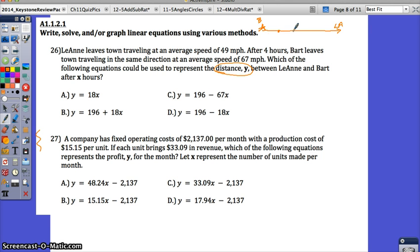After 1 hour, what's happening to the distance? Leanne's getting farther away. After 2 hours, farther away. After 3 hours, farther away. After 4 hours, farther away. How far is Leanne from Bart? She's traveling 49 miles per hour for 4 hours before Bart even gets started. 49 times 4 is 196. So at this point, Leanne is 196 miles from Bart.